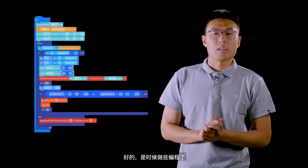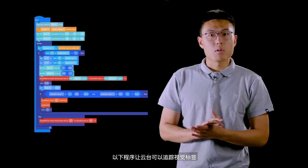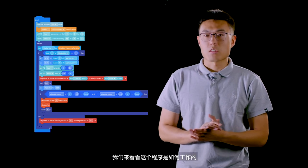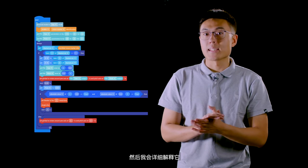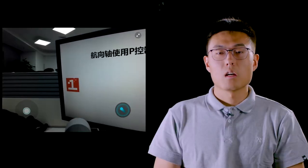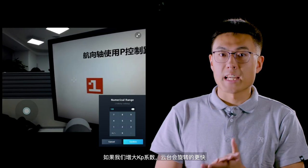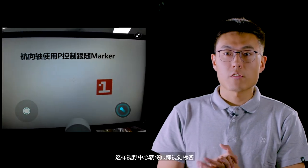Great, it's time to do some programming. The following program allows gimbal to track the visual marker. Let's first take a look at how the program works, and then I will explain the program in detail. If we increase the kp parameter, the gimbal will rotate faster, so that the center of the field of view of the camera will track the visual marker.